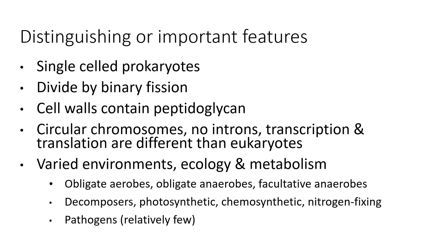Bacteria occur in every environment possible and their ecology and metabolism vary widely. Some are obligate aerobes, which means they require oxygen. Others are obligate anaerobes, meaning they cannot handle any oxygen — it poisons them and they die. Others are facultative anaerobes, meaning they can use oxygen or get along fine without it. A lot of bacteria are decomposers, one of their main ecological roles — they recycle chemicals and nutrients. Others are photosynthetic, some are chemosynthetic, and others are nitrogen-fixing bacteria, which are critical because most of the nitrogen we use to build proteins and nucleic acids comes from nitrogen fixed by these bacteria.